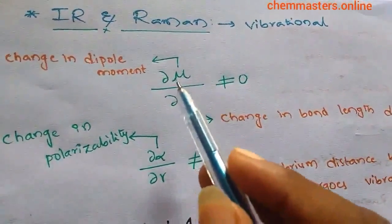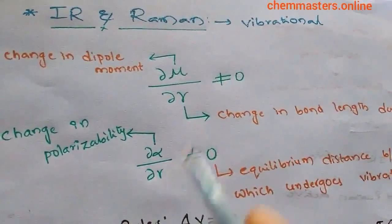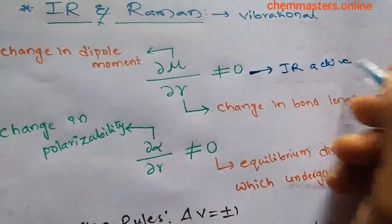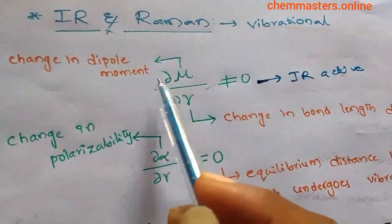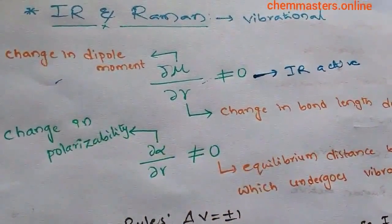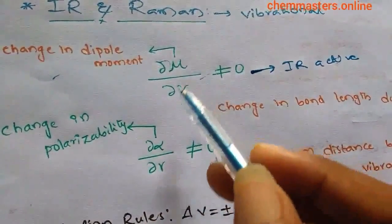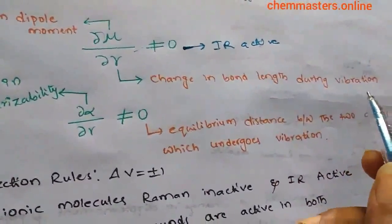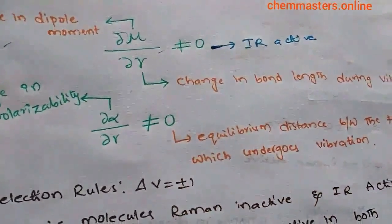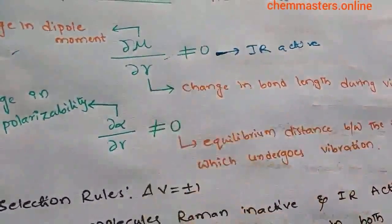We have the equation: ∂μ/∂r ≠ 0, which means IR active. Here, μ indicates dipole moment, so ∂μ indicates the differential change in dipole moment. The term ∂r indicates the change in bond length during the vibration of the molecule after getting energy.